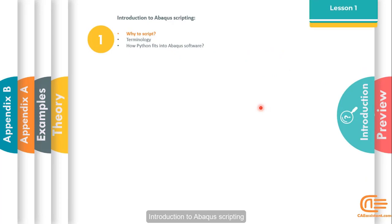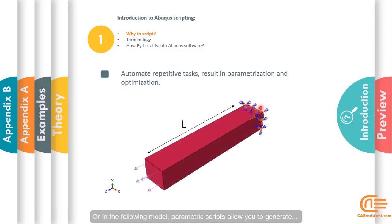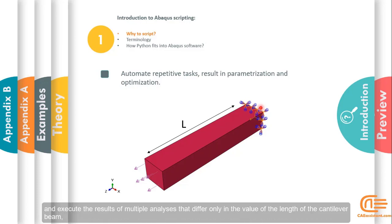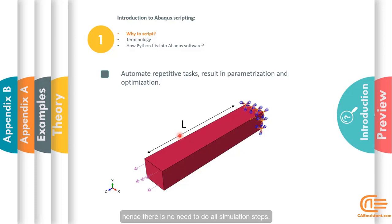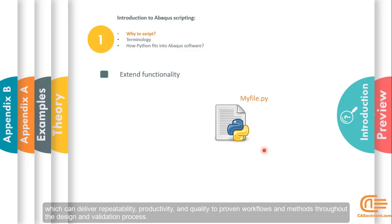Introduction to Abaqus scripting and what motivates us to do scripting. Generally, to do any repetitive task, we need to script. For example, in order to sketch a model like a truss, which has parts repeated continuously, we can use scripting to save our time in sketching. Or parametric scripts allow you to generate and execute the result of multiple analyses that differ only in the value of parameters like the length of a cantilever beam. Hence, there is no need to do all simulation steps. By adding Python extension to Abaqus, we can employ process automation which can deliver repeatability, productivity, and quality to proven workflow and methods throughout the design and validation process.